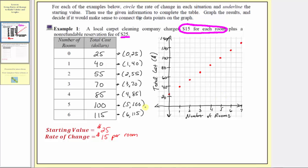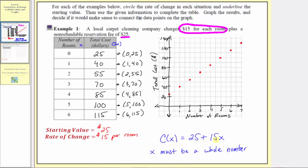Let's also write an equation we could have used to complete this table. If we let the total cost be c(x) and the number of rooms cleaned be x, then c(x) = 25 + 15x. We need to recognize that x can only be a whole number because it represents the number of rooms cleaned. If we just wrote c(x) = 25 + 15x without that note, we might assume x could be any real number — but in this case, it can only be a whole number.